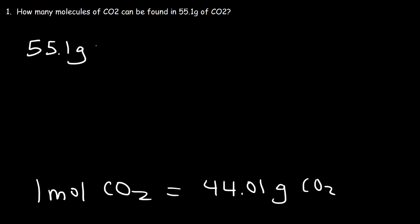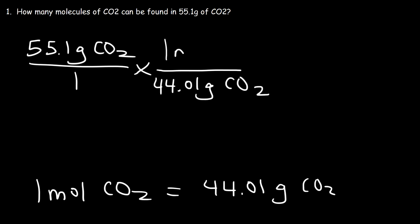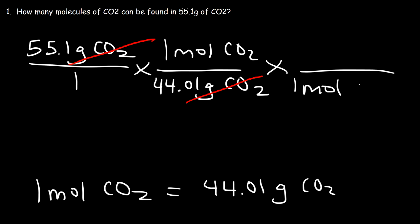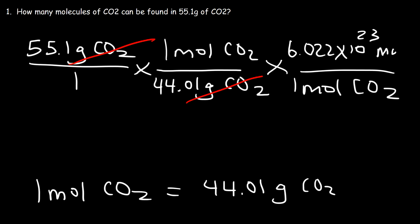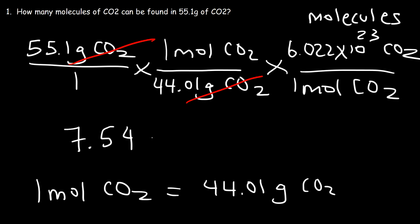So let's start with 55.1 grams of CO2. We use 44.01 grams of CO2 per mole so that the unit grams of CO2 cancels. Then we convert moles to molecules: one mole of CO2 equals Avogadro's number, 6.022 times 10 to the 23 molecules. So now we just do the math: 55.1 divided by 44.01, multiplied by 6.022 times 10 to the 23. The answer is 7.54 times 10 to the 23 molecules of carbon dioxide.